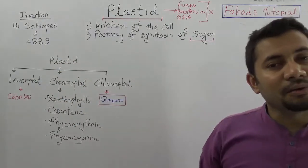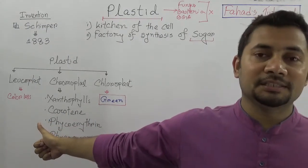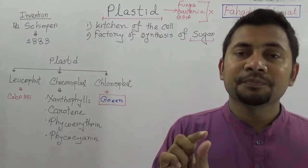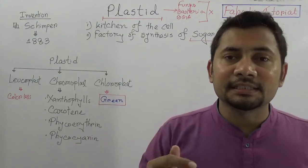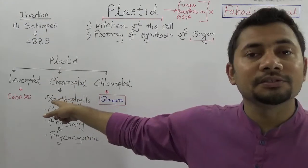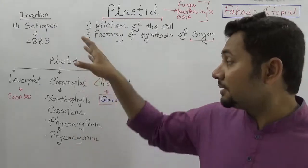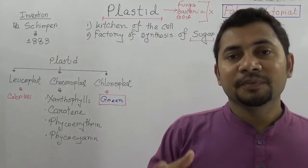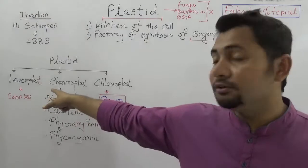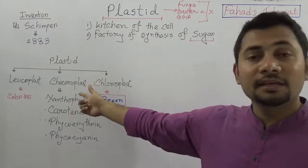There are three special types of plastids: number one, leukoplast; number two, chromoplast; and number three, chloroplast. Leukoplast — just like leukocytes in blood are colorless — these plastids have no color because they do not depend on sunlight. They are situated where sunlight cannot reach, making them colorless.